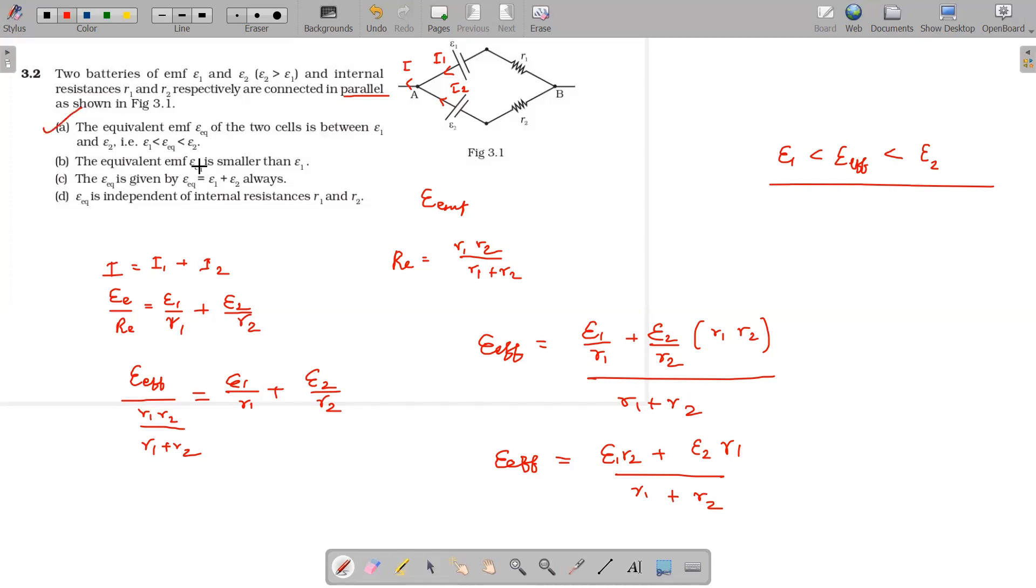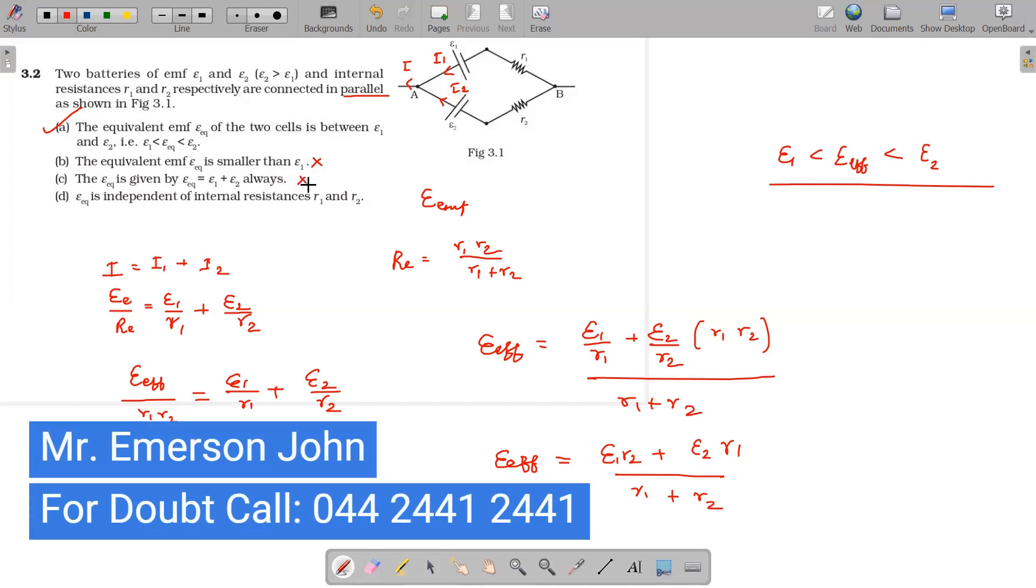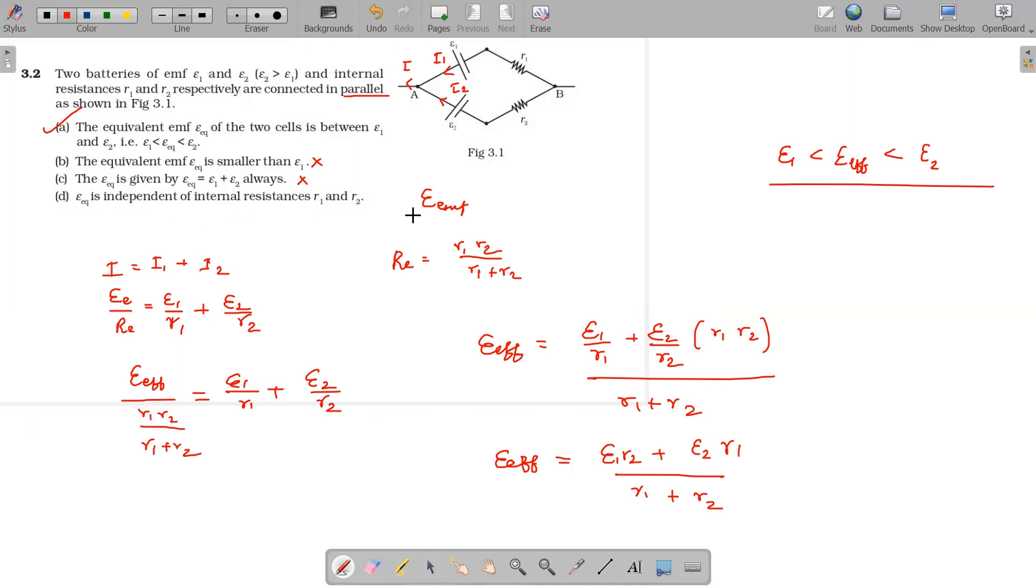So the equivalent EMF is smaller than e1 - that's wrong. Equivalent resistance is e1 plus e2 and equal independent of equivalent, independent of internal resistance - that's also wrong. So the answer is option A.